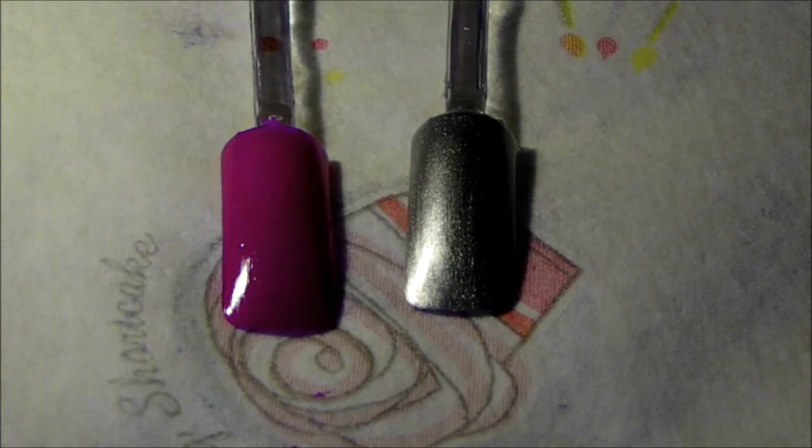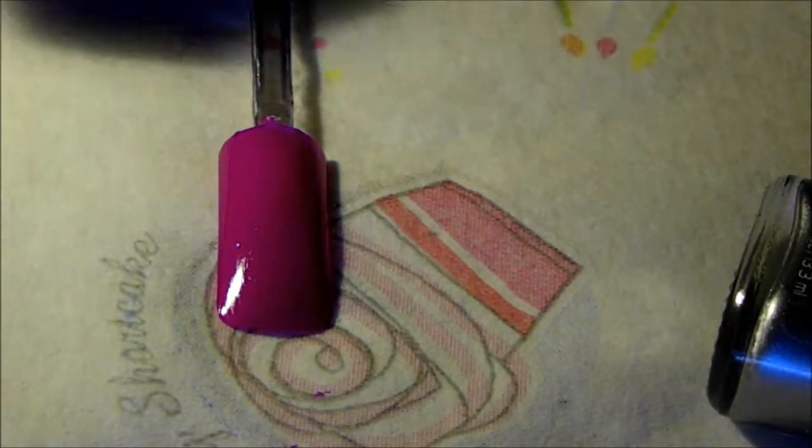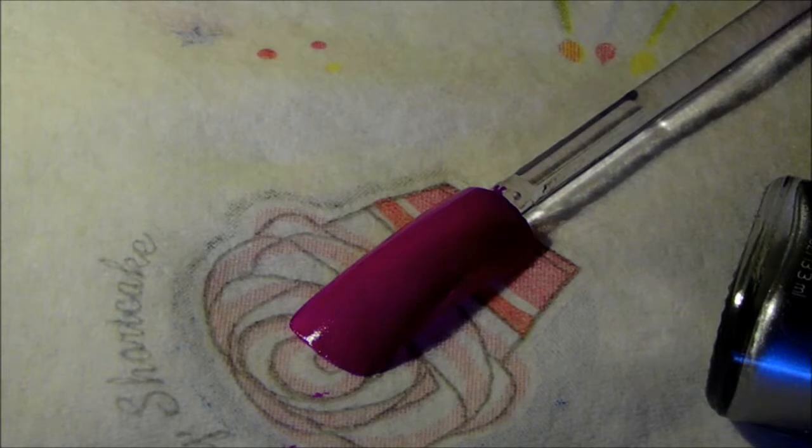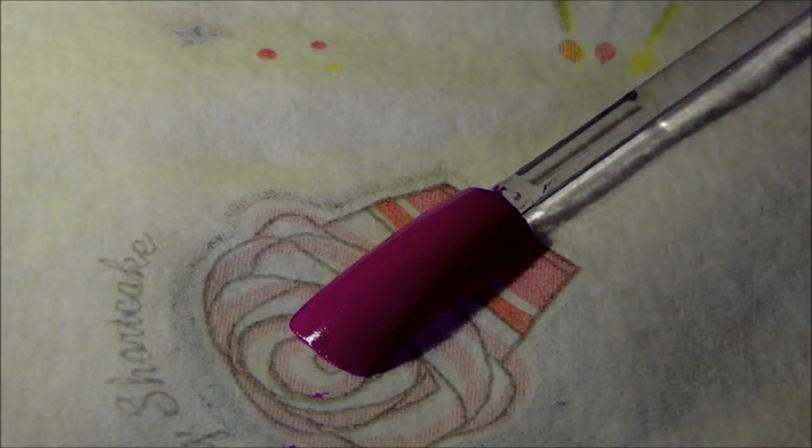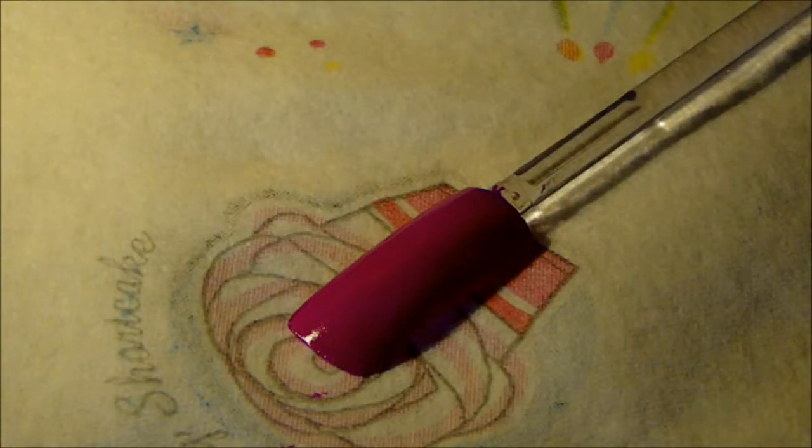And I want to do the silver stamping on this pretty bright pink or fuchsia, whatever you want to call it. I want to see what it looks like. Let's see what that looks like.